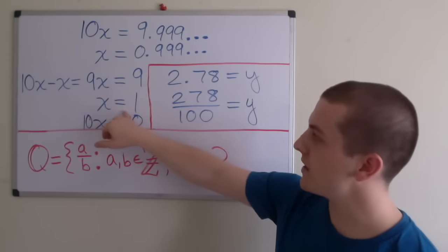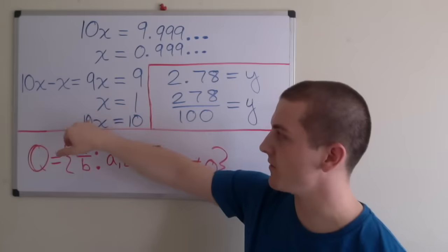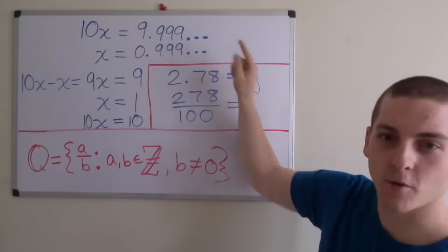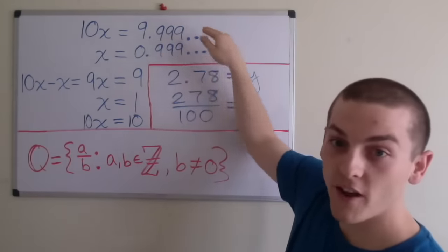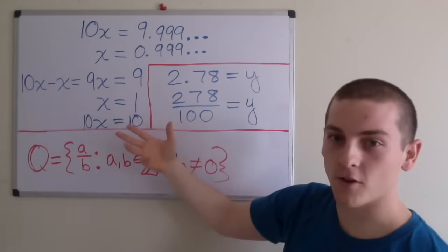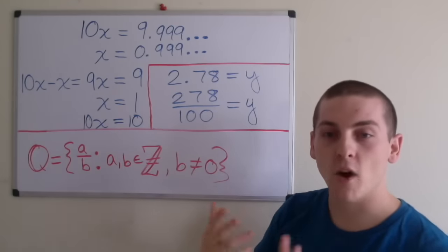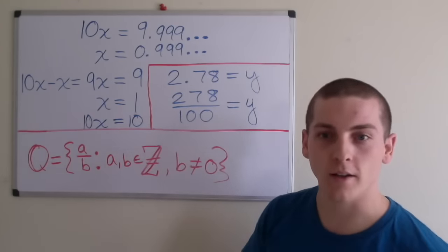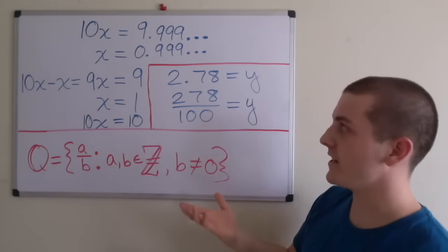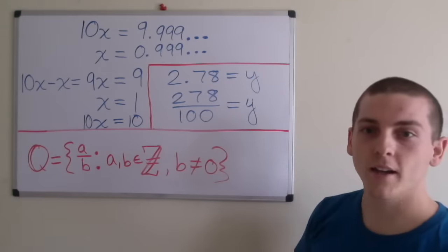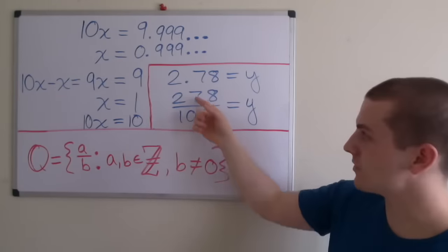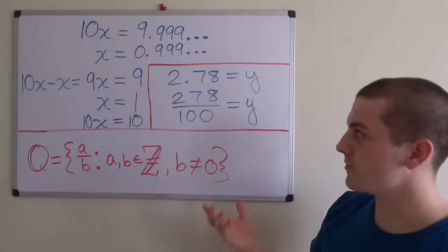And then if we multiply both sides by 10, we have 10x equals 10. So now we have 10x equals 10, but 10x also equals 9.99 repeating. So we have — and these are in fact true — 9.99 repeating equals 10. So we can now express 10x as an integer, which is a rational number. We can put 10 divided by 1, which is a ratio. So another problem we have is terminating decimals. If we have 2.78 equal to y, then we can easily say 278 divided by 100 equals y as well. These are 2 integers, and it's another rational number.